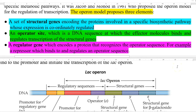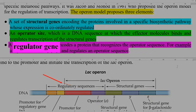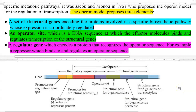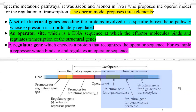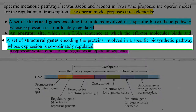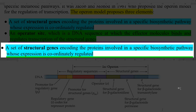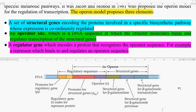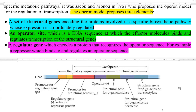Any operon has a structural gene, an operator site, and a regulatory gene. The structural genes include gene Z, gene Y, and gene A. Gene Z encodes the beta-galactosidase enzyme, gene Y encodes beta-galactosidase permease to take beta-galactosidase inside the cell, and the third structural gene encodes beta-galactosidase transacetylase. A structural gene is defined as a set of genes encoding proteins involved in a specific biosynthetic pathway whose expression is coordinately regulated. All these genes listed are essentially required in the lac operon to utilize lactose sugar.